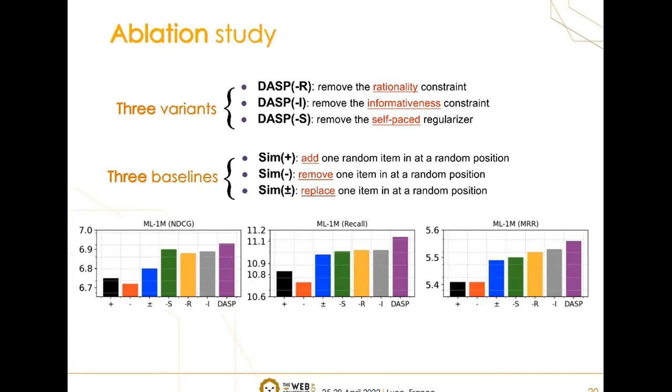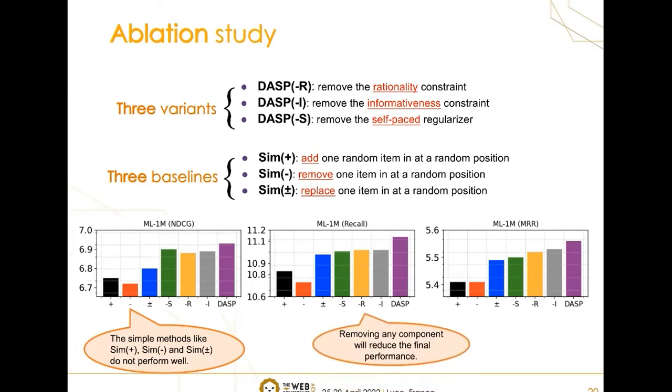The results on MovieLens dataset are shown in this figure. We can see the simple methods like sim adding, sim removing, and sim replacing do not perform well, due to the lack of principled design to constrain the generated sequence. The final performance of DASP would reduce if we remove the rationality constraint or informativeness constraint, which manifests that the requirements of rationality and informativeness are both important.